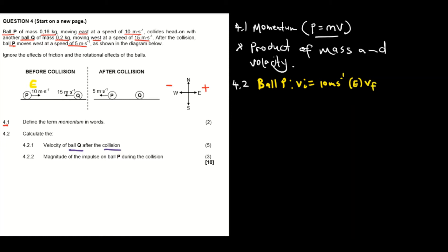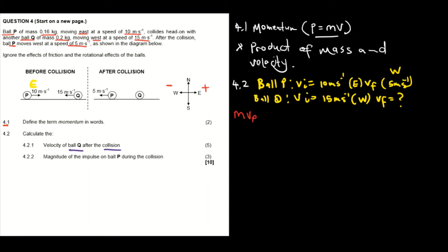The final velocity of ball P is 5 meters per second in the west direction, which is negative. The final velocity of ball Q is what we don't know. The equation we're going to use is: mv of ball P initial plus mv of ball Q initial equals mv of ball P final plus mv of ball Q final.